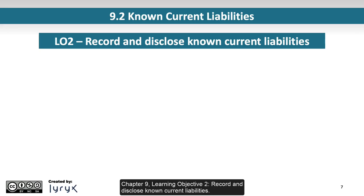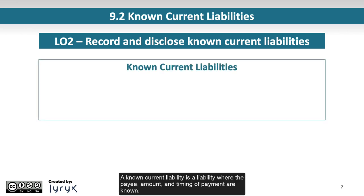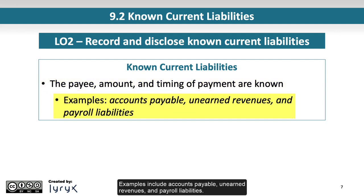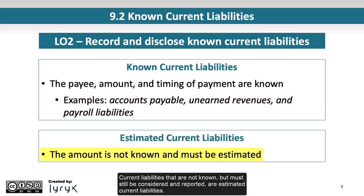Chapter 9, Learning Objective 2: Record and Disclose Known Current Liabilities. A known current liability is a liability where the payee, amount, and timing of payment are known. Examples include accounts payable, unearned revenues, and payroll liabilities. Current liabilities that are not known, but must still be considered and reported, are estimated current liabilities.